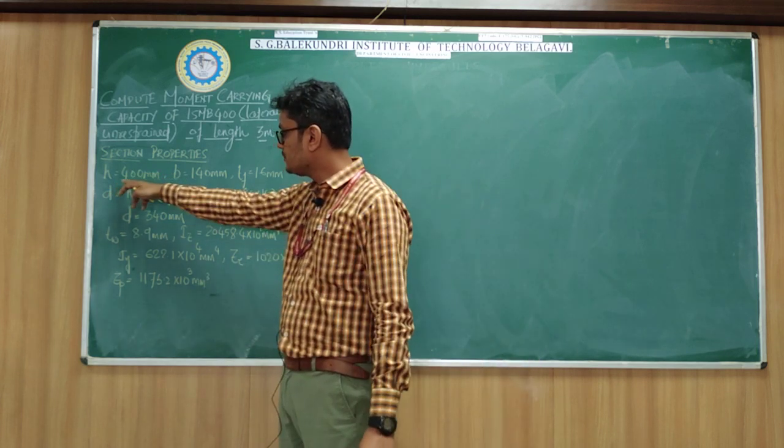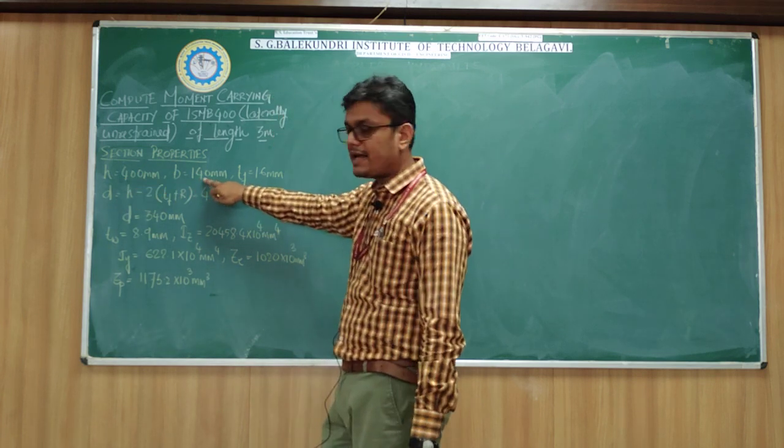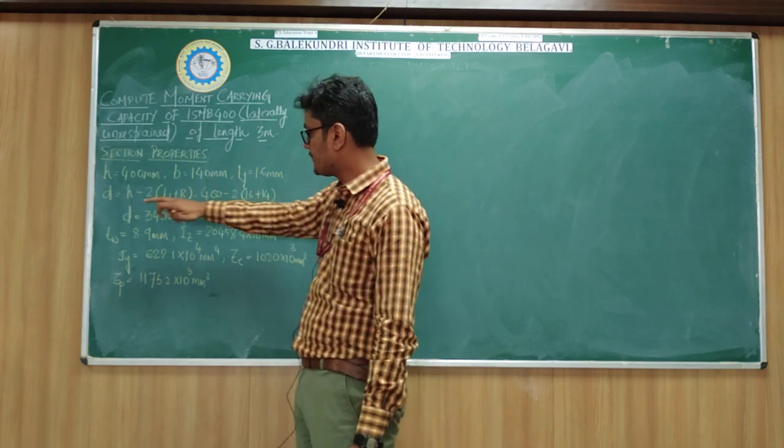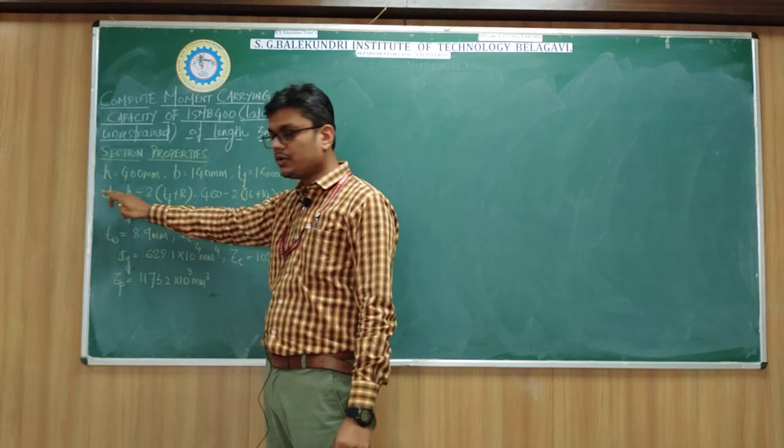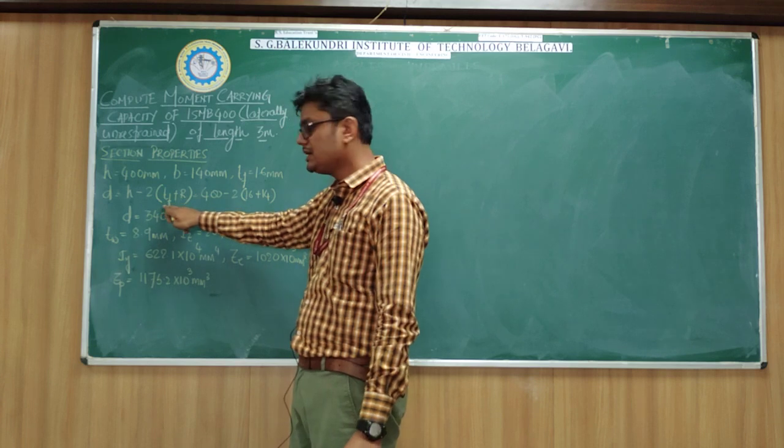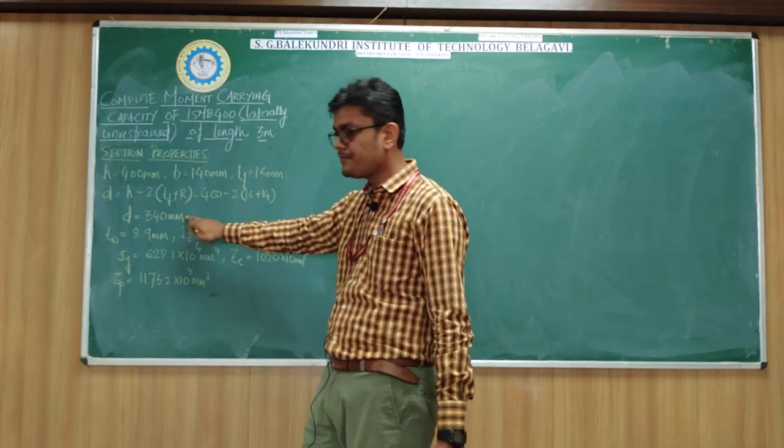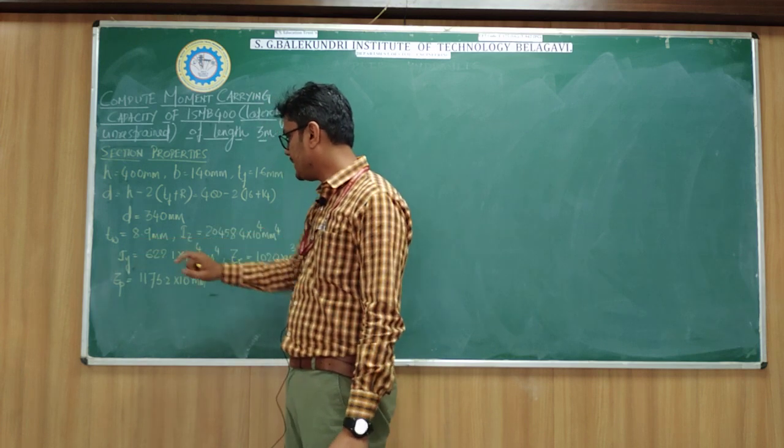This is the total overall depth of 400mm beam, width of flange, thickness of flange. This is the depth of web which is calculated as H (overall depth) minus 2 times thickness of flange plus root radius, which is 340mm. Thickness of web is 8.9.